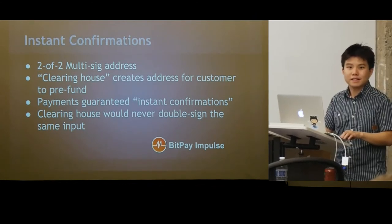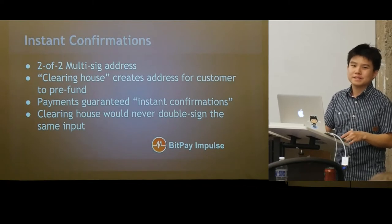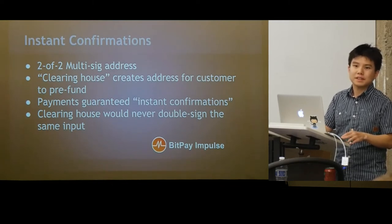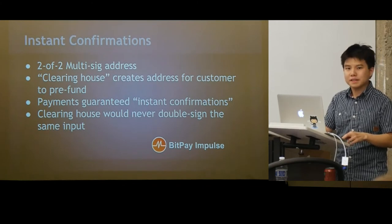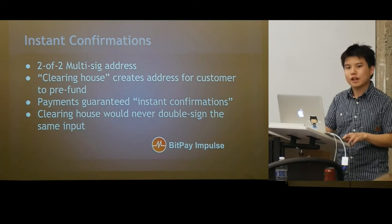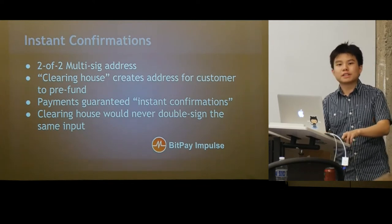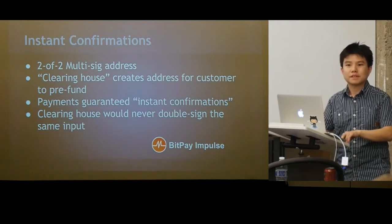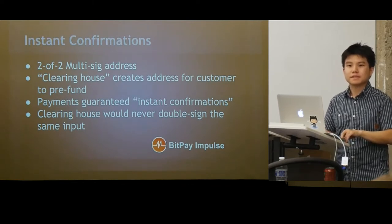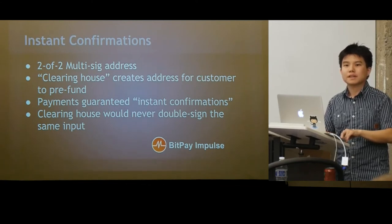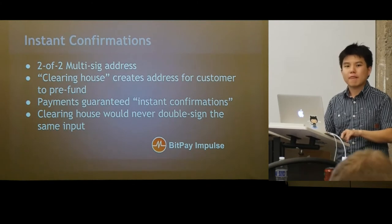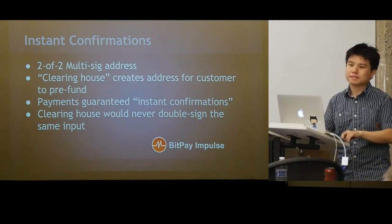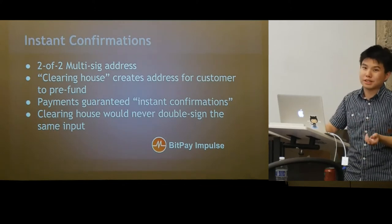To clarify: payment channels are a totally separate idea for implementing fast, small, re-negotiable amounts. BitPay called their instant confirmation approach 'payment channels,' which confused many people into thinking they were using micropayment channels — but they're not. This instant confirmation approach is also implemented by the GreenAddress wallet. A micropayment channel is specifically about replacing off-chain transactions incrementally — that's different from what GreenAddress does.